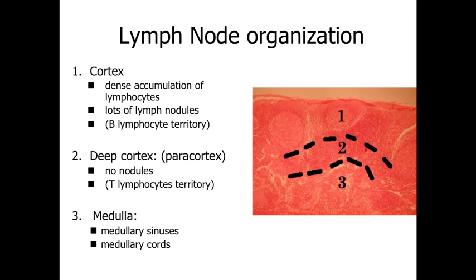Deeper to the cortex is going to be the deep cortex, or the paracortex. This is going to be a more even staining appearance, still of small lymphocytes — very basophilic staining, lots of small cells — but no lymph nodules. In the deep cortex, no nodules, and we're going to have T lymphocytes associated with cell-mediated immunity. Deeper to that, we have a more open, lighter staining region because the cells are scattered away from one another, and we actually have medullary sinuses — spaces in between medullary cords where the cells are going to be located.